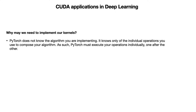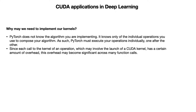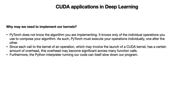As such, PyTorch must execute our operations individually, one after the other. Since each call to the kernel of an operation may involve the launch of a CUDA kernel and has a certain amount of overhead, this overhead may become significant across many function calls.